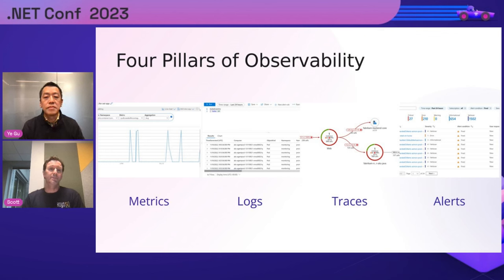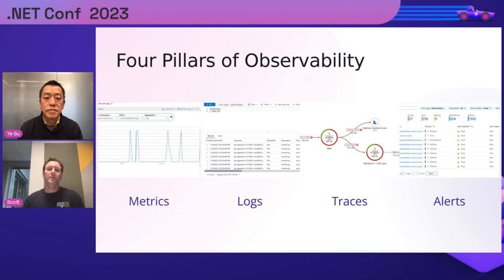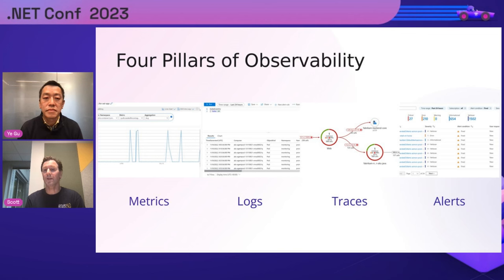The four pillars of observability. We'll start with metrics — that's where the journey begins and where most customers start with their monitoring tools. Metrics give you insight into the performance and health of your services; you can create key performance indicators, look at response time, throughput, and resource utilization. The next pillar is logs. Logs let you get more details into the behavior of systems, the errors, warnings, and events, helping you with troubleshooting and understanding system behavior by looking at both trends and patterns over time.